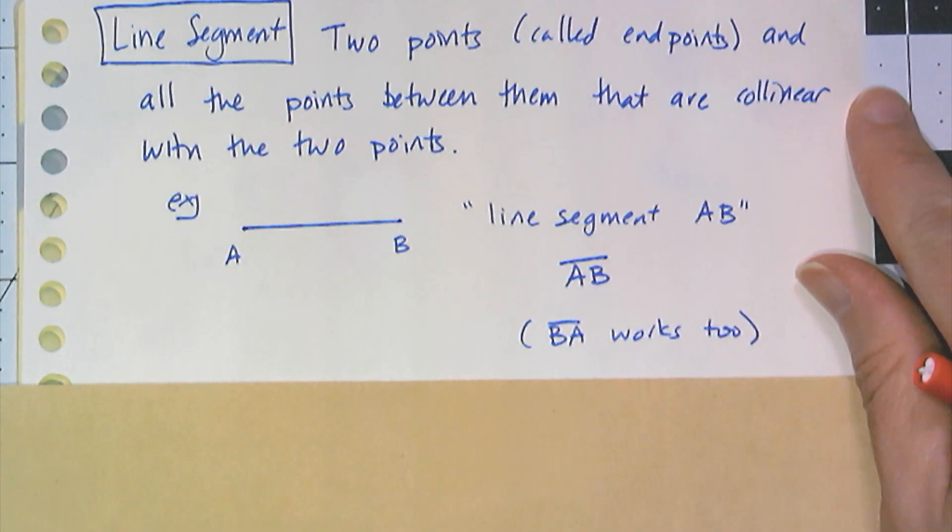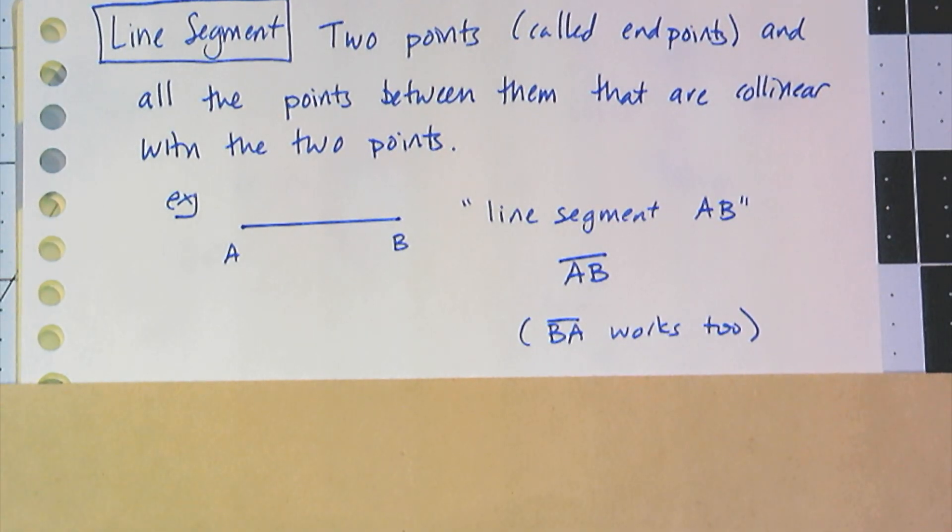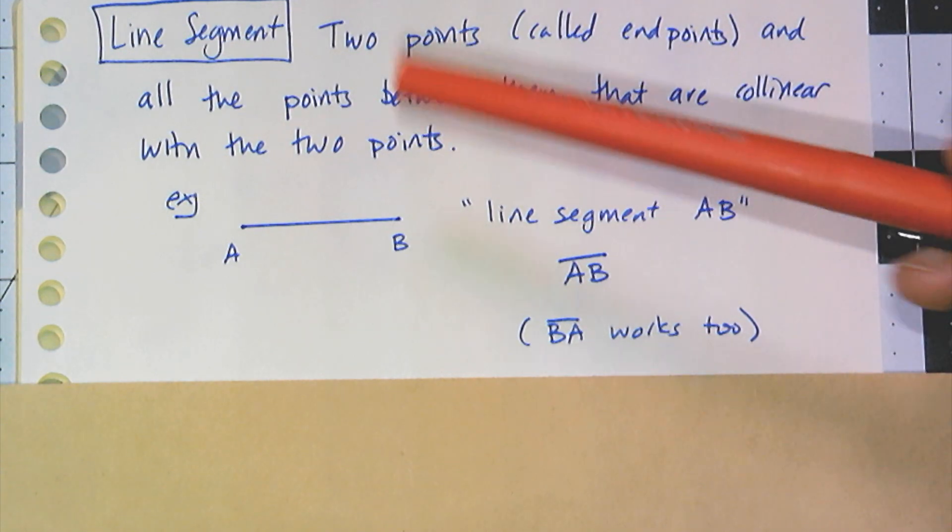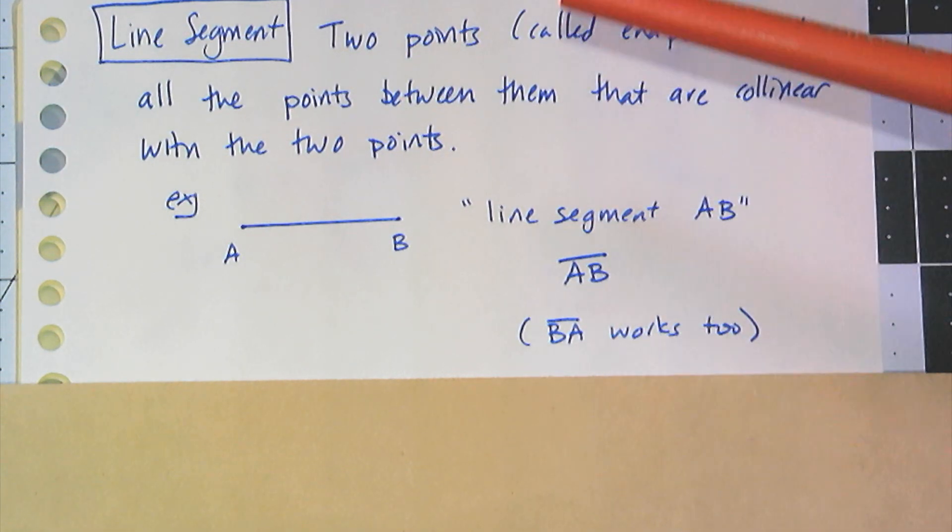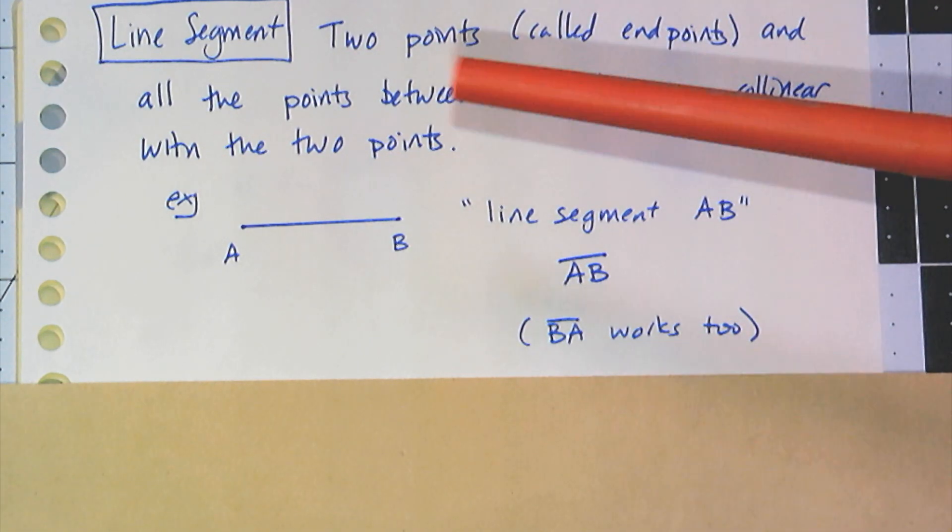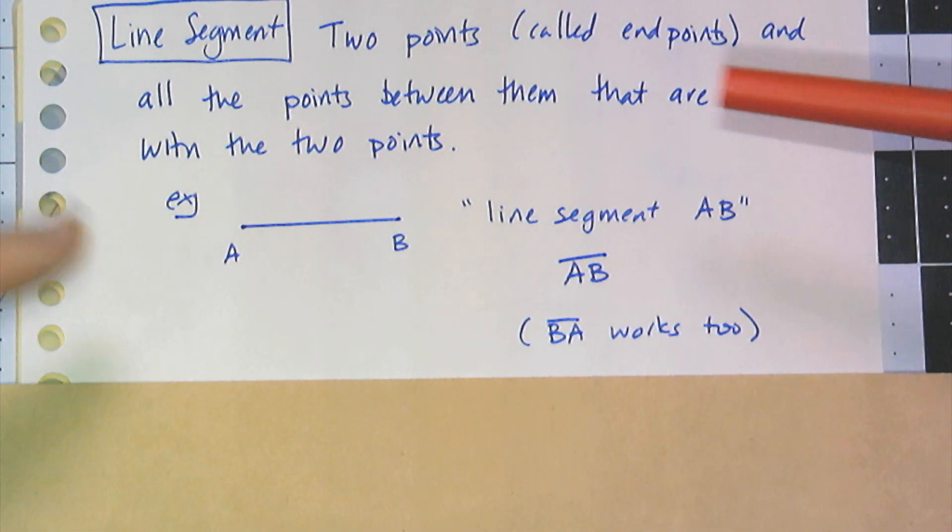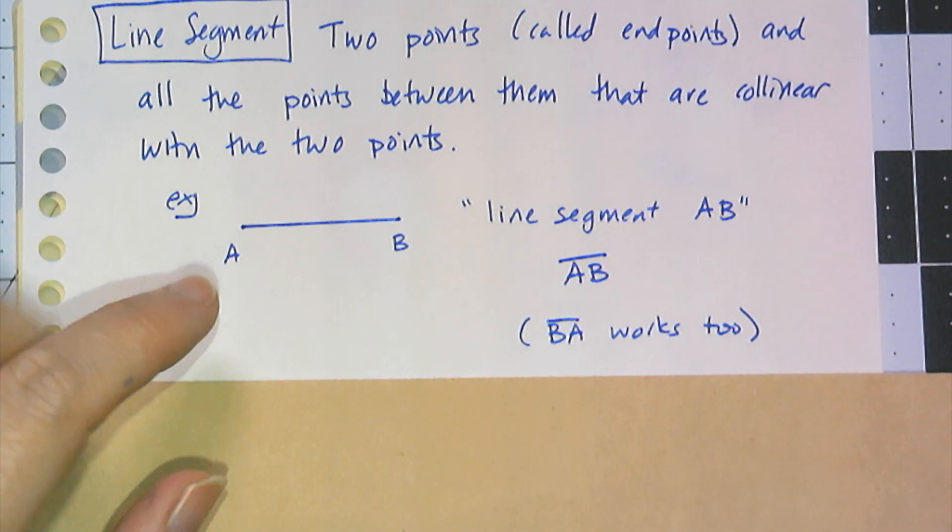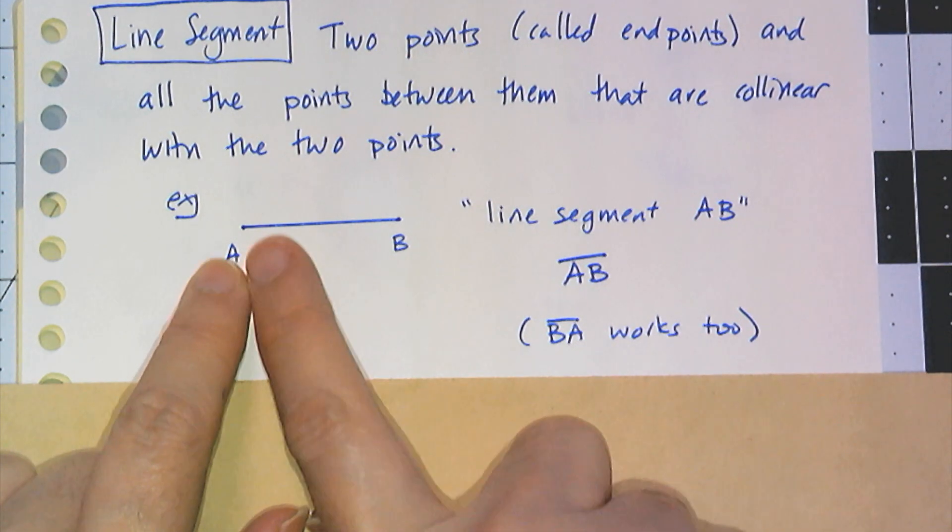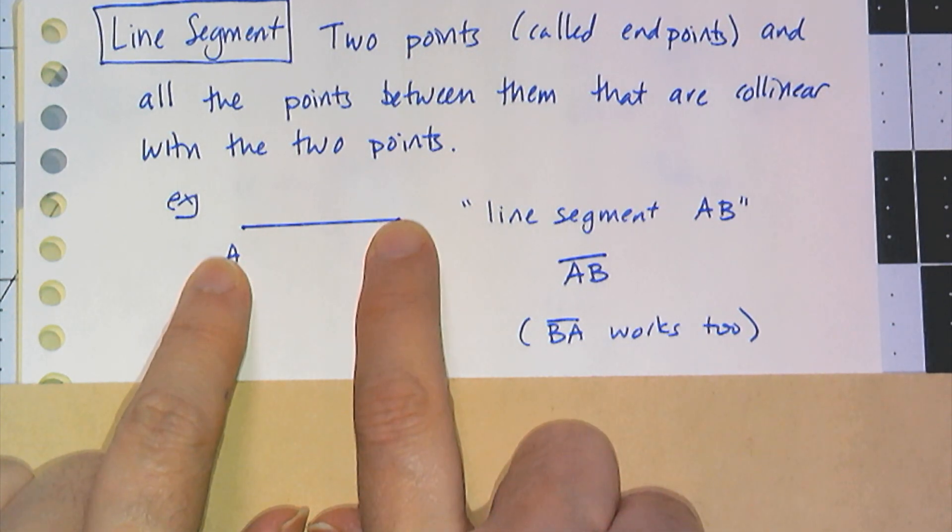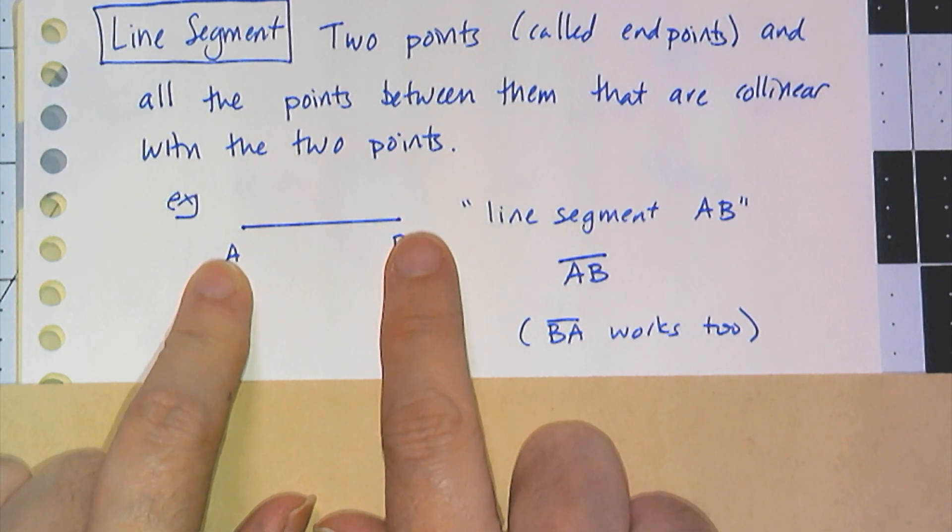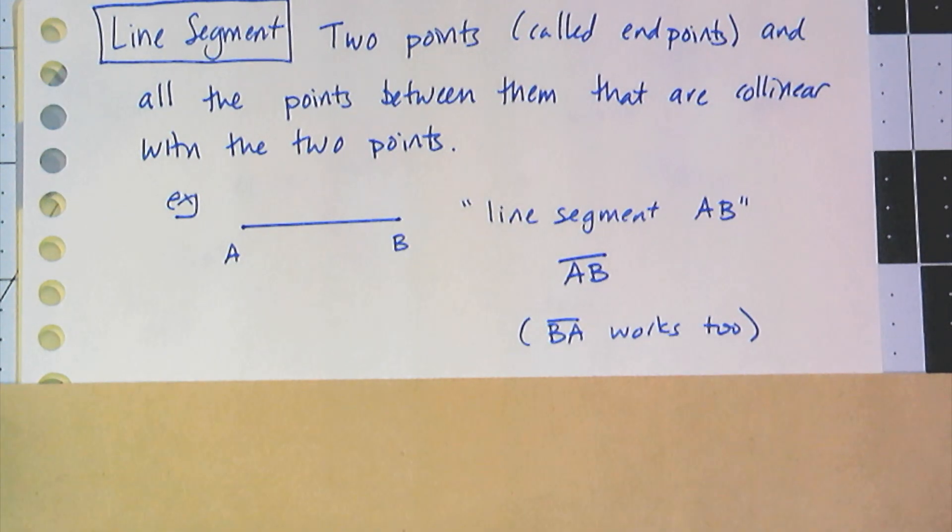The reason I want the definition of collinear is so I can define what a line segment is. It is two points called endpoints and all of the points between them that are collinear with those two points. So I have two points and all of the collinear points between them. That is what a line segment is. Most people think of it as just a piece of a line.